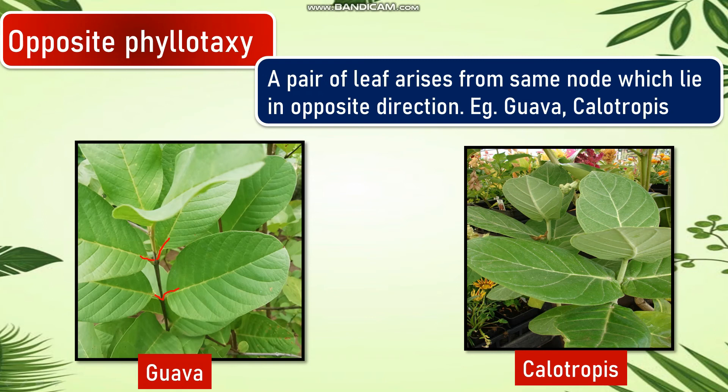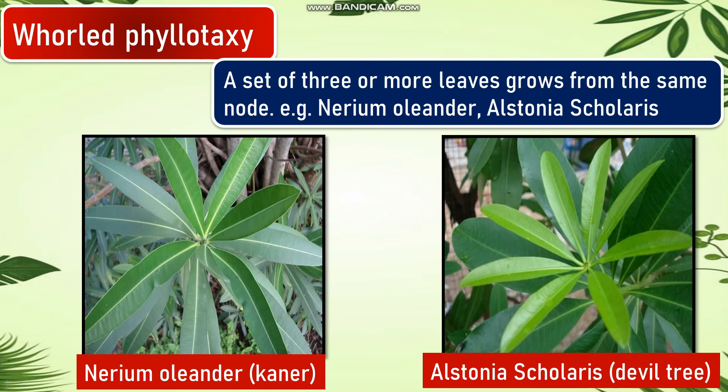Whorled phyllotaxy: a set of three or more leaves grows from the same node. Examples include Nerium oleander and Alstonia scholaris. Here we can see a set of leaves growing from the same node.